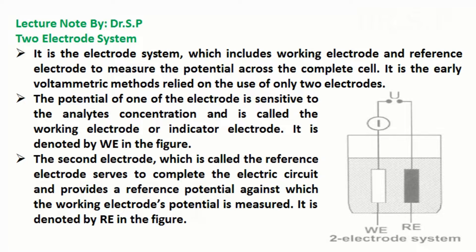In this tutorial we will discuss two-electrode system and three-electrode system. Let's begin with two-electrode system. It is the electrode system which includes working electrode and reference electrode to measure the potential across the complete cell.